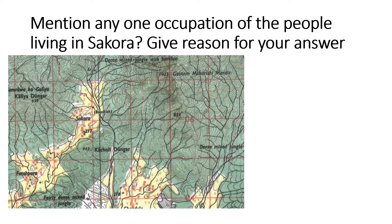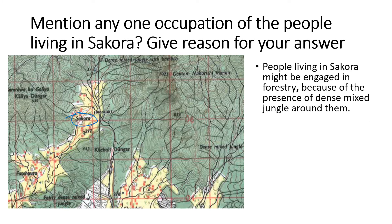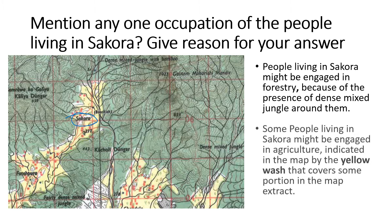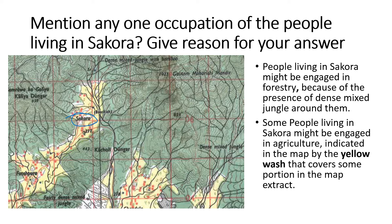Next: mention any one occupation of the people living in Sakura, and give reason for your answer. Sakura is here in the middle of the forest. People living in Sakura might be engaged in forestry because of the presence of dense mixed jungle around them. Some people might also be engaged in agriculture, indicated by the yellow wash covering some portion of the map extract. Dense mixed jungle means deciduous trees, which makes it easy to carry out forestry in that area.